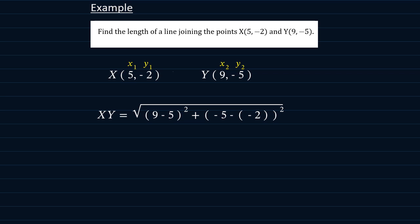If we simplify this, 9 minus 5 gives us 4, so we have 4 squared. Minus 5 minus minus 2 is minus 3, so we have minus 3 squared. So we get the square root of 4 squared, which is 16, and minus 3 squared, which is 9.